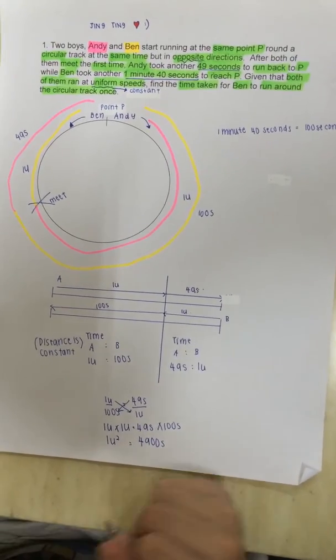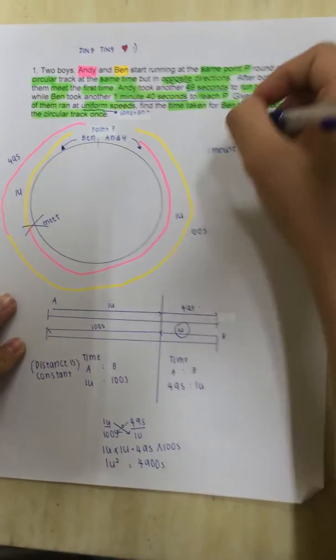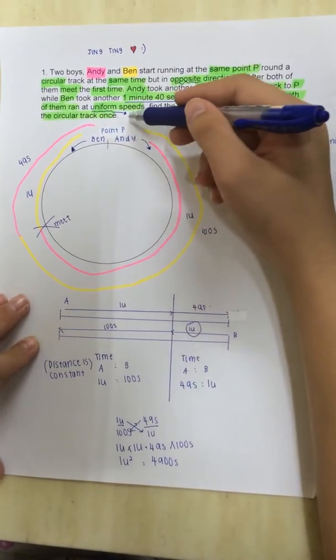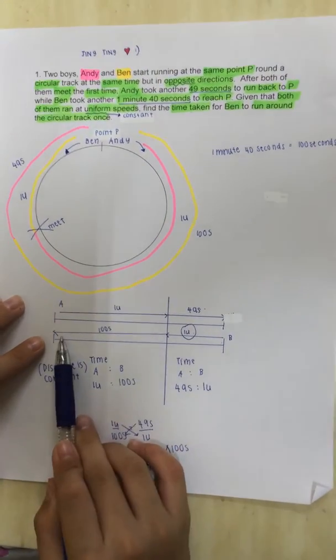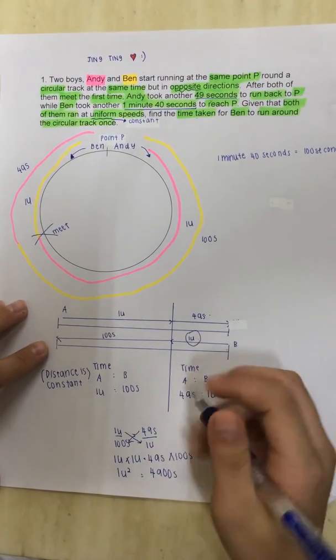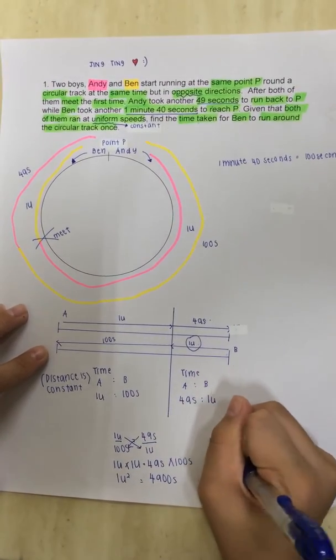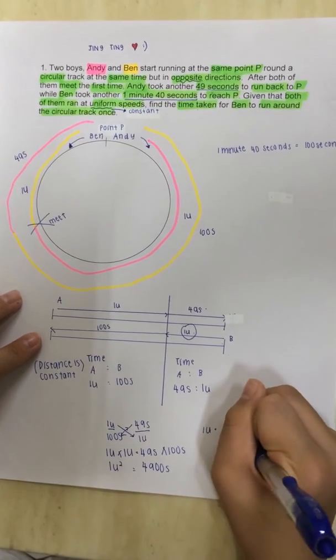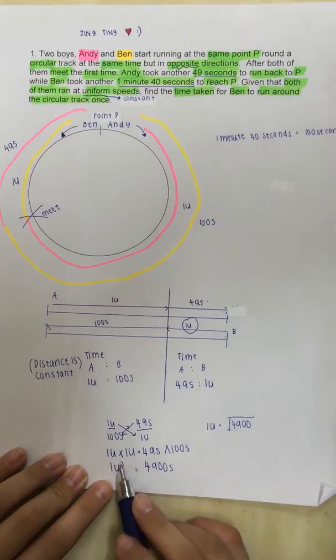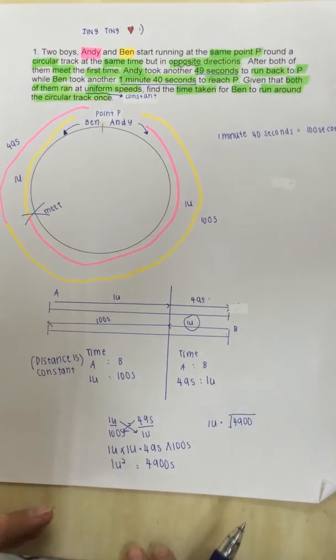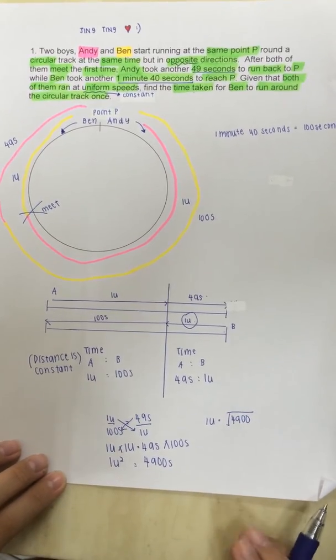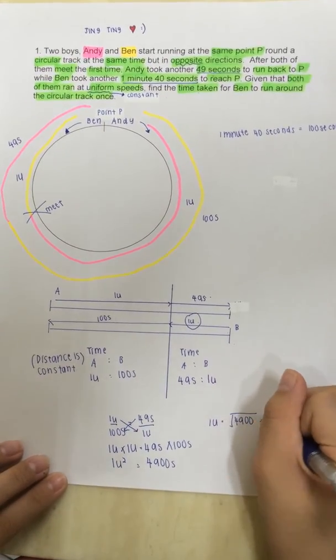So, now, we want to find 1 unit so we can find the time taken for Ben to run the circular track once, which is from here to here. The only thing we can't find is 1 unit. So, we are going to find 1 unit now. So, 1 unit is 4900 square root, but not divided by 2 because it's times 2, which is not actually 1 unit times 2, but 1 unit times 1 unit. So, with the square root. And the answer will be 70.